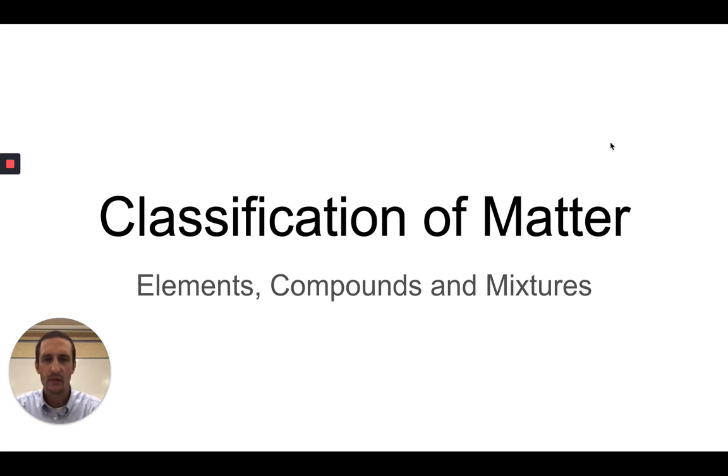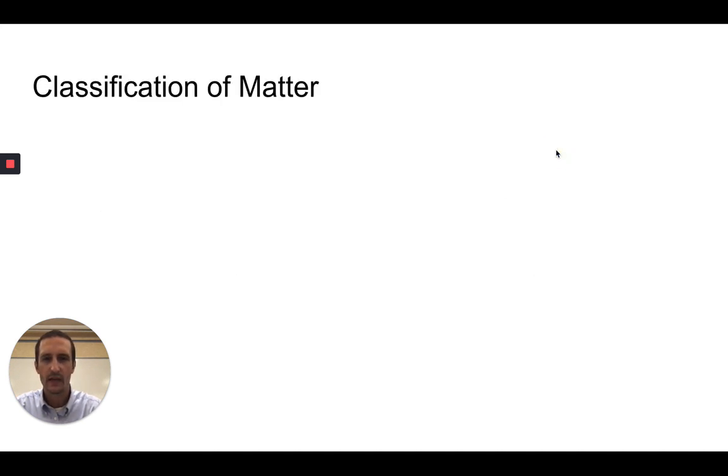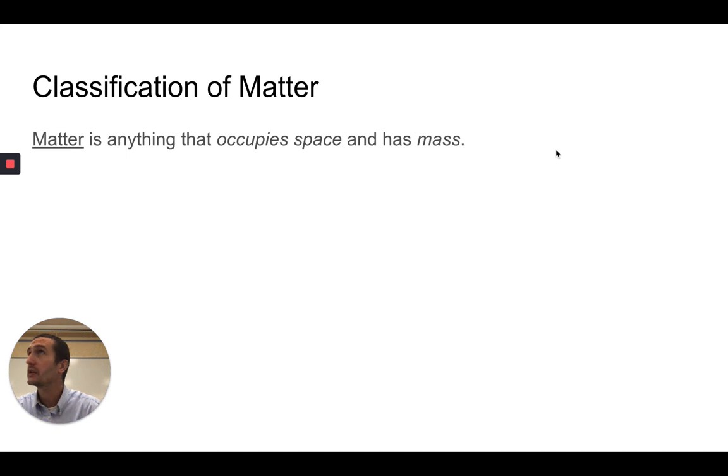To start with, let's give a quick definition of matter. Matter is anything that occupies space and has mass. If we look around us, all of this stuff around us is matter.